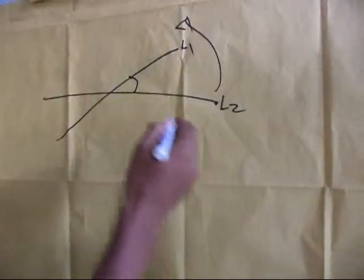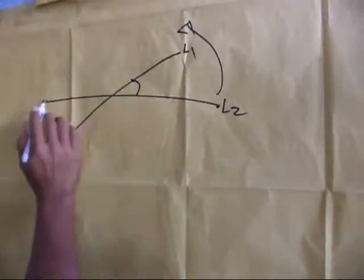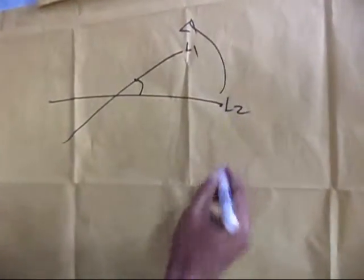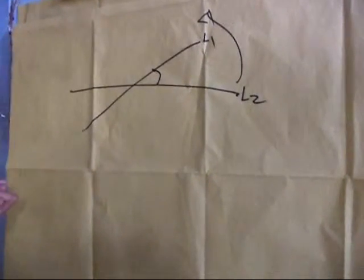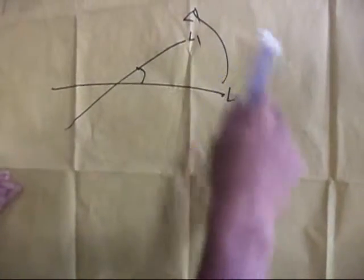If two non-vertical lines have slopes M1 and M2 respectively, and theta is the angle formed by line 1 and line 2.